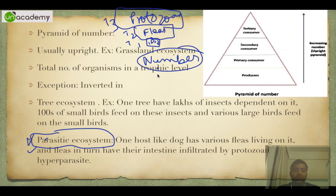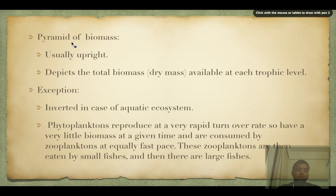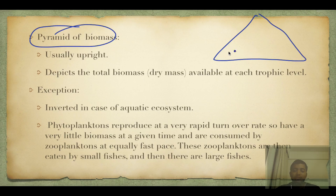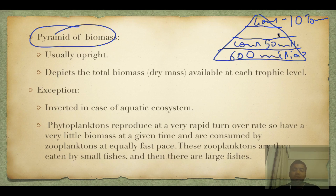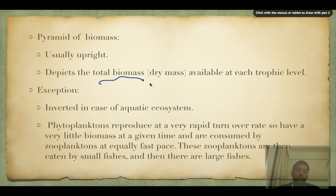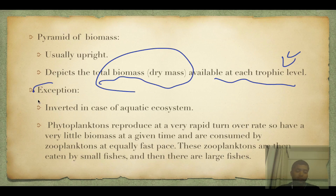Similarly, there is the pyramid of biomass. It is usually upright: wheat at 600 million tons, cows at 50 million tons, then very few lions at maybe 10 tons, and some hyenas or wild dogs at 100 tons. It is almost always upright and depicts the total biomass available at each trophic level.